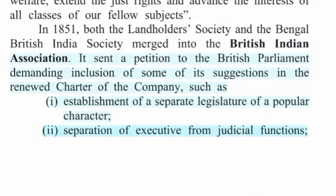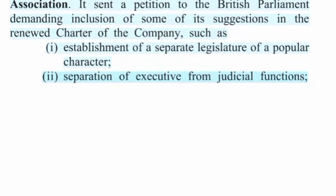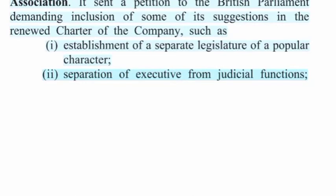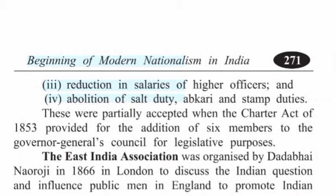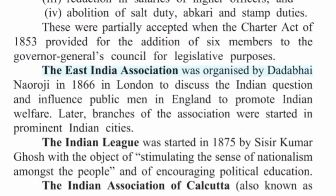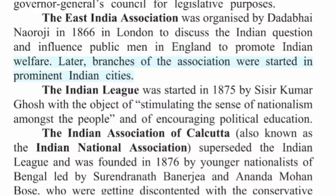The British Indian Association sent a petition to the British Parliament demanding: establishment of a separate legislature of a popular character; separation of executive from judicial functions; reduction in salaries of higher officers; and abolition of salt duty, abkari and stamp duties. These were partially accepted when the Charter Act of 1853 provided for the addition of six members to the Governor-General's Council for legislative purposes. The East India Association was organized by Dadabhai Naoroji in 1866 in London to discuss the Indian question and influence public men in England to promote Indian welfare; later, branches were started in prominent Indian cities.